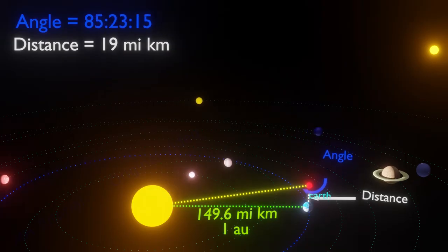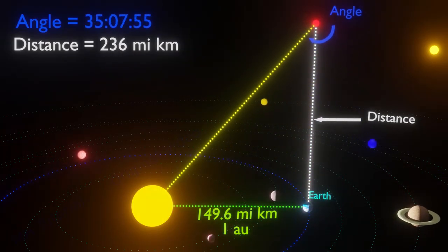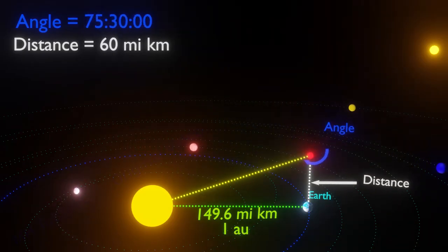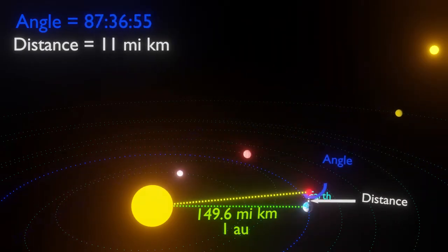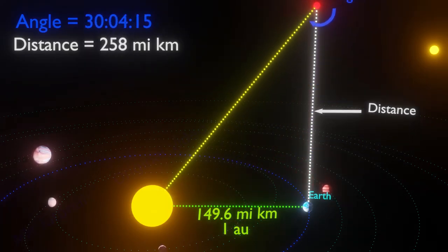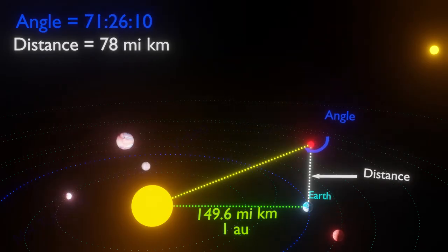An object moving perpendicular to that line continuously makes variable angles with respect to the sun and the earth. Now, think carefully. Further the object goes from the earth, smaller the angle it creates. And closer the object to the earth, the angle is bigger.